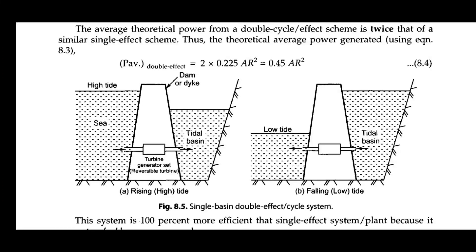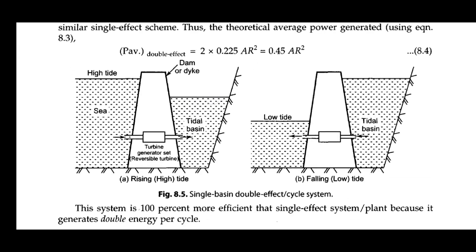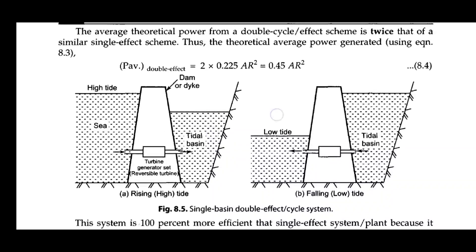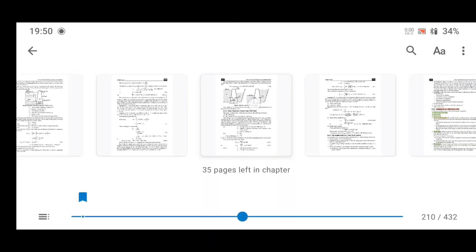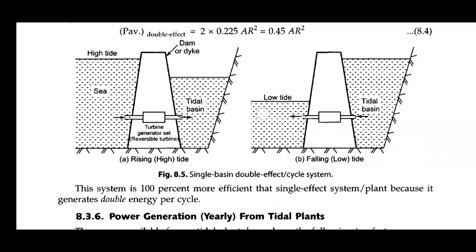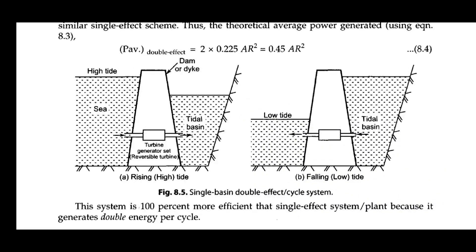This is a temporary barrier. We are going to talk about the dam or dyke. A turbine is installed downstream. On the right side, this is a high tide and this one is a low tide.